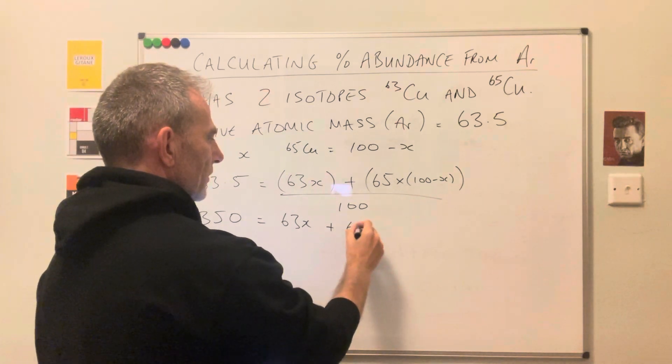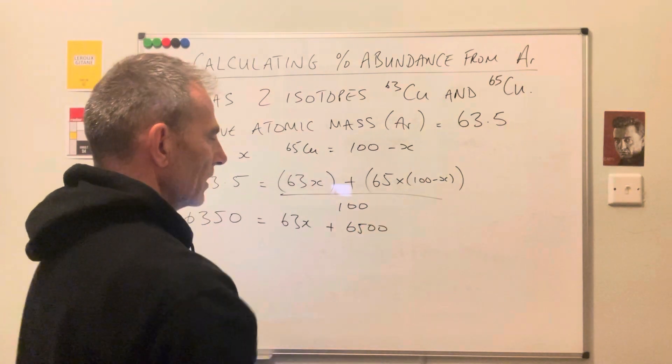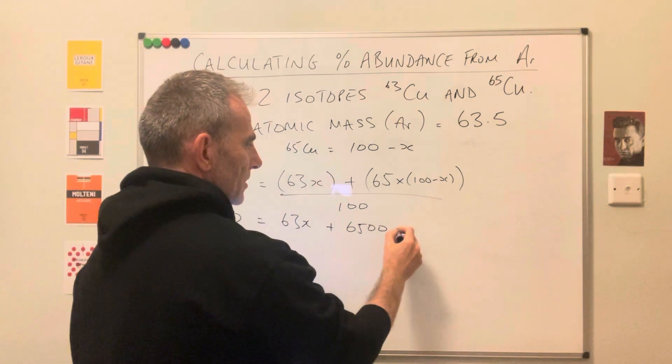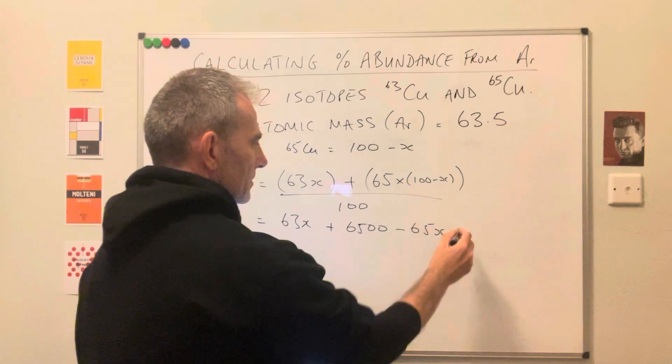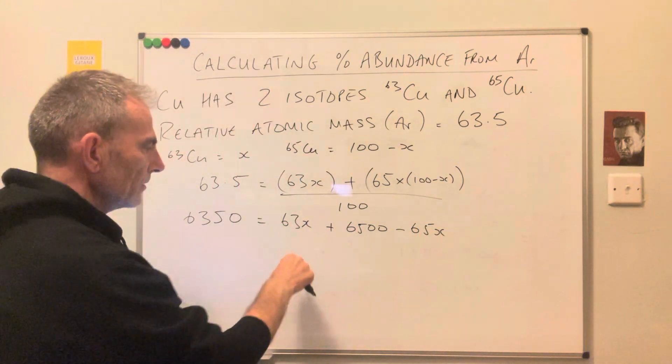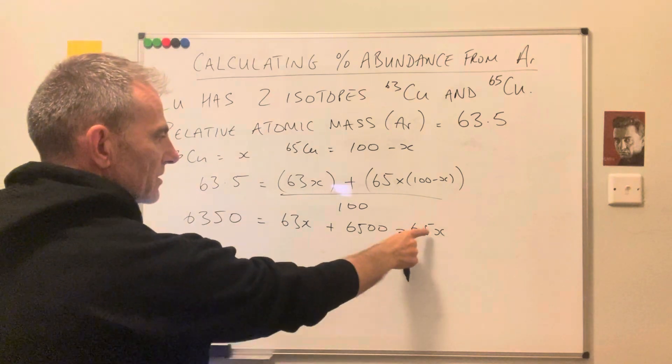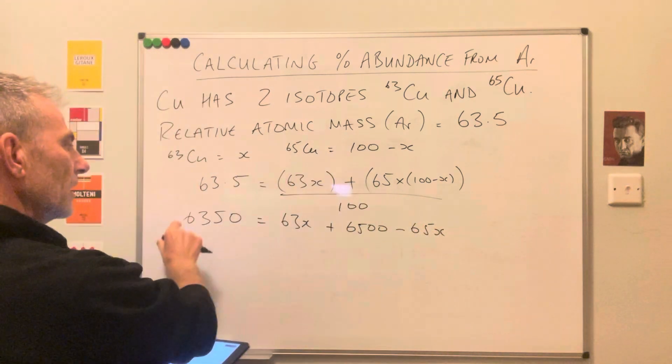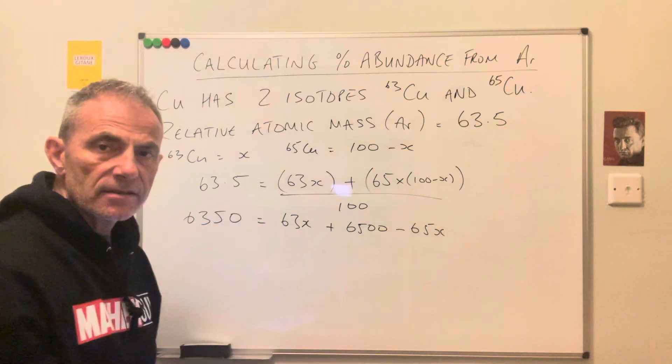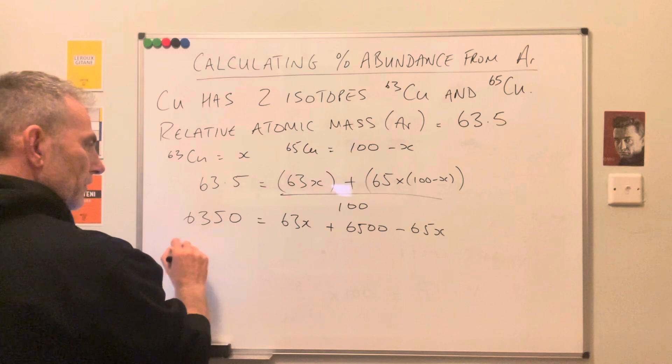6500, and then we've got 65 times minus x, so that's minus 65x. Remember, we're after the x value, so what I'm going to do is take the minus 65x over here. It'll become plus 65x. That'll go over there, it'll become minus 63x. So let's do the full thing.